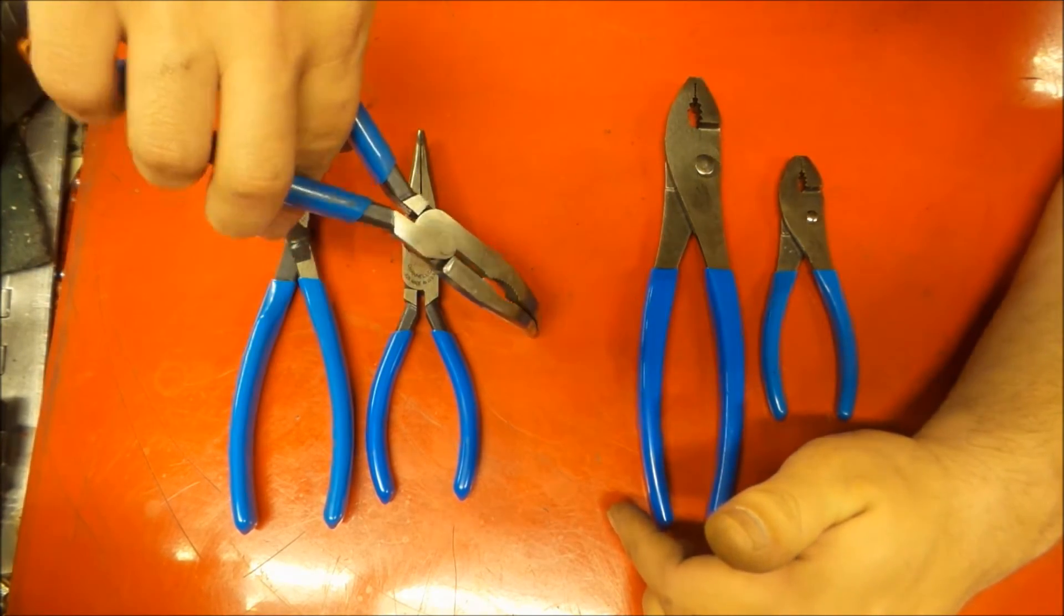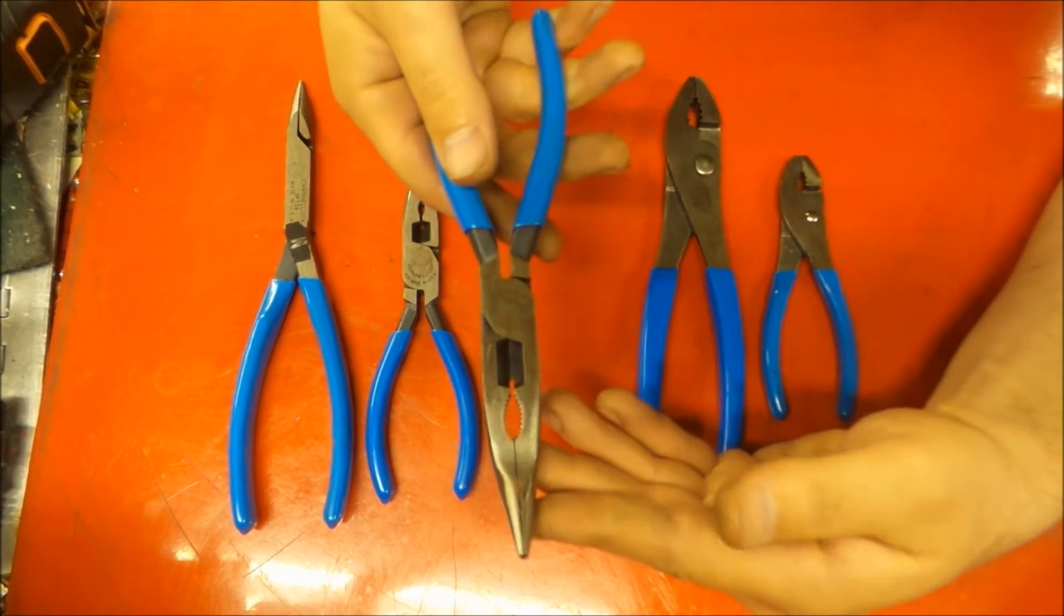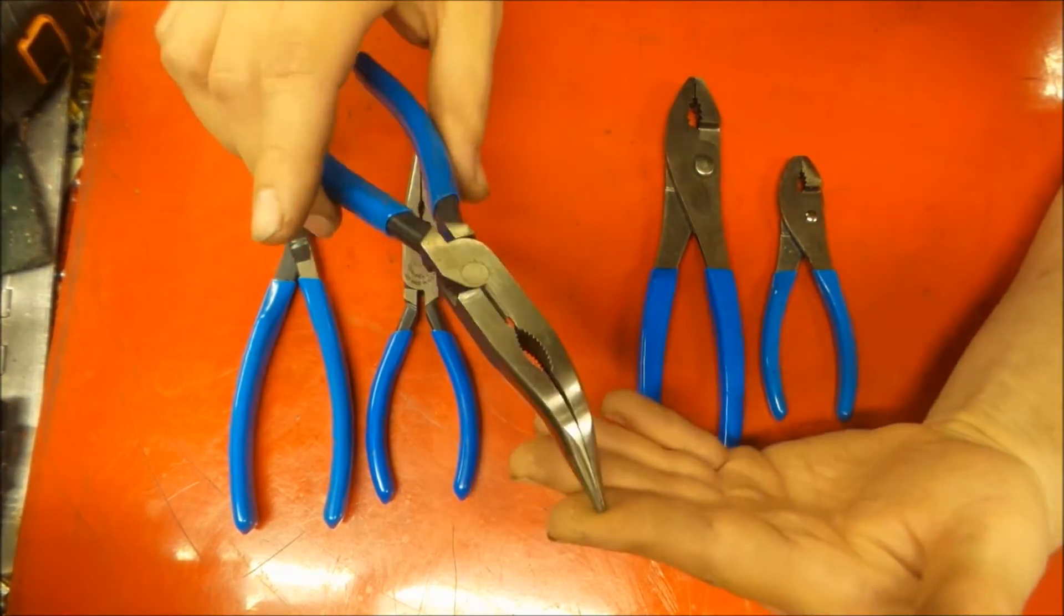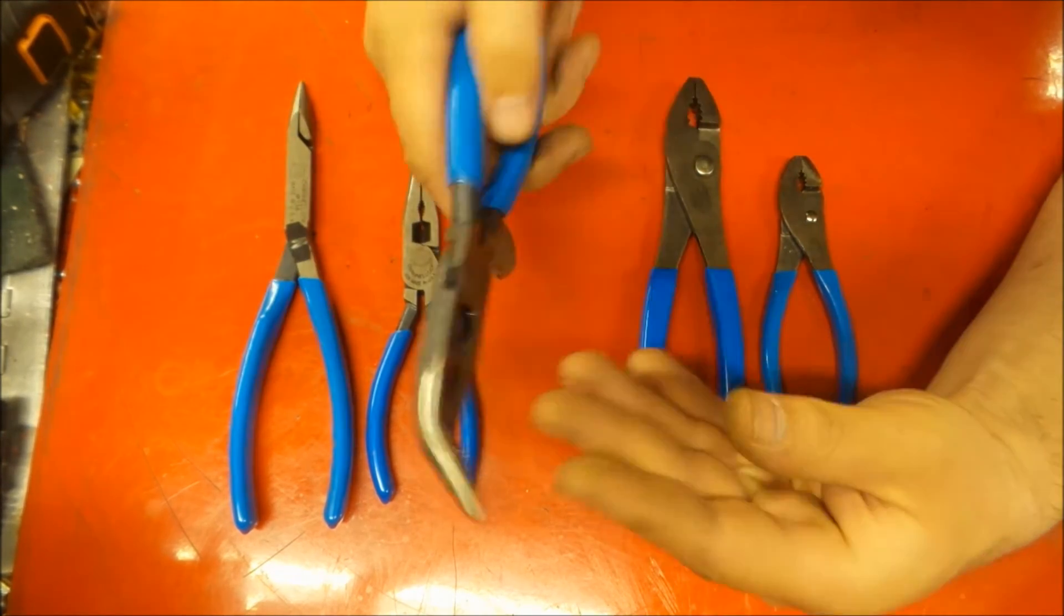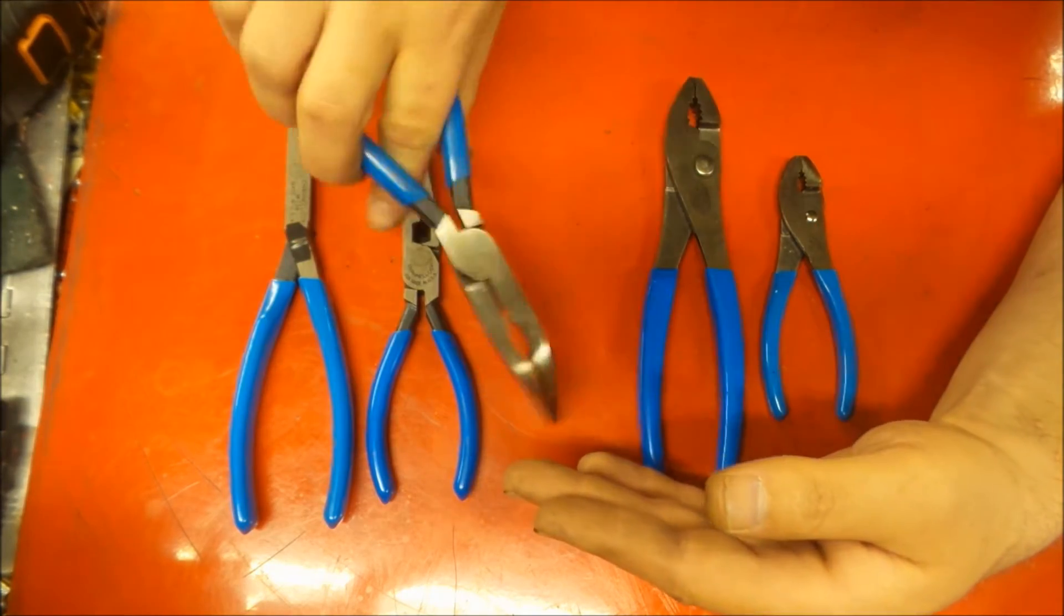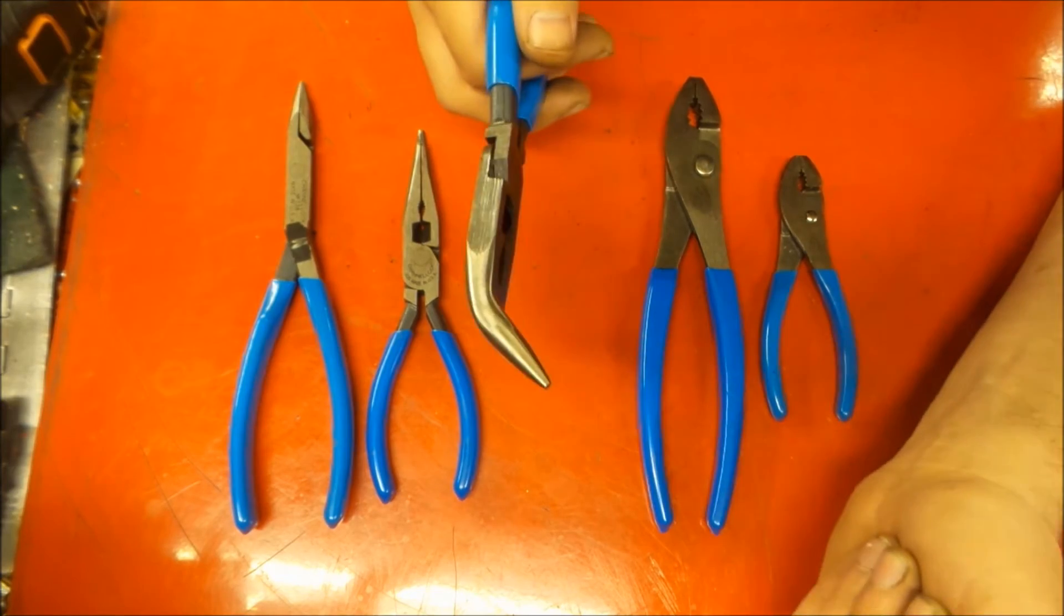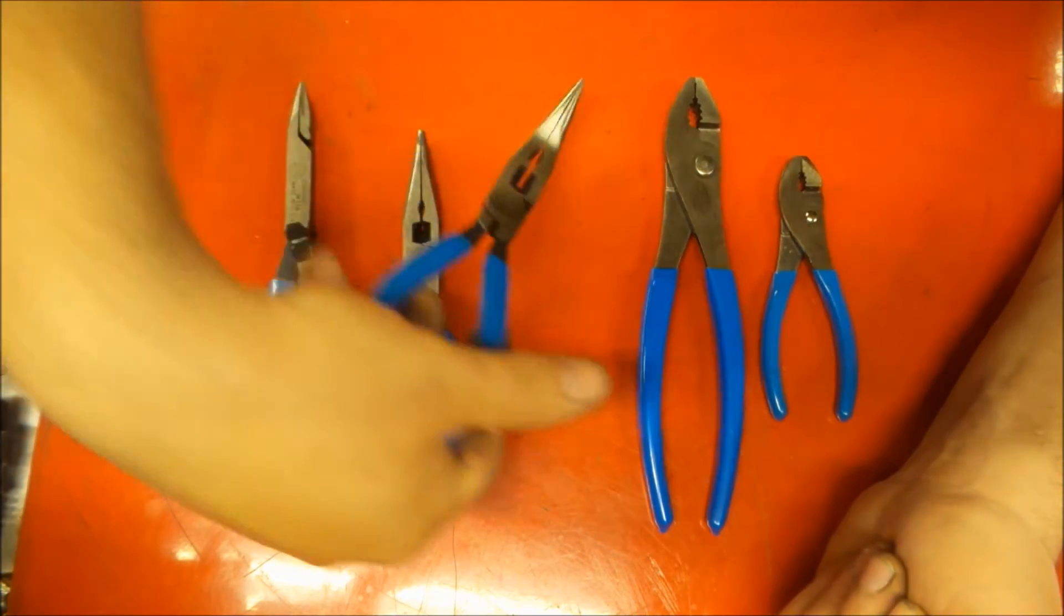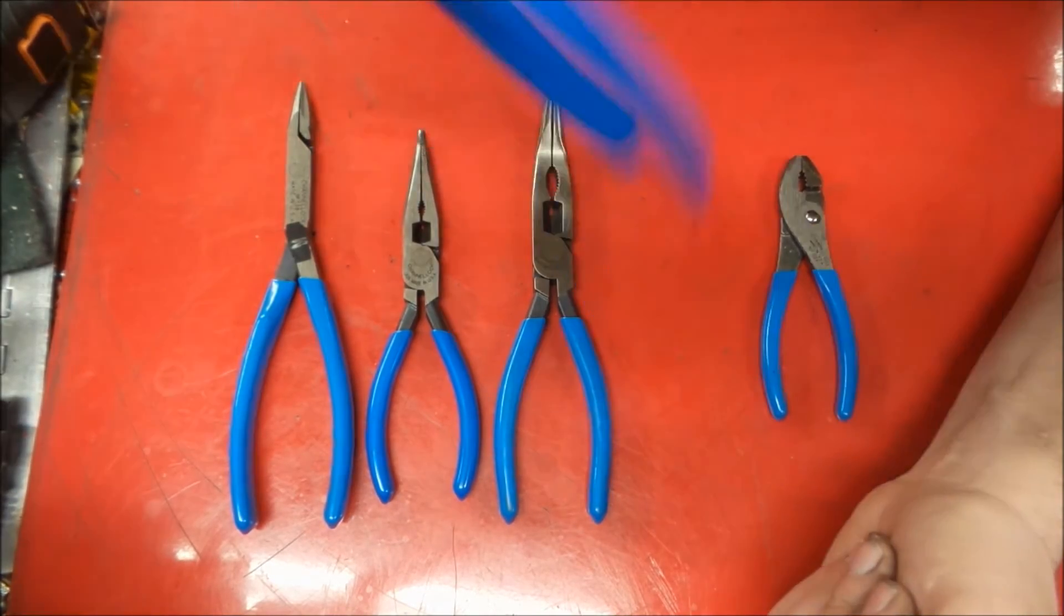So these curve jaw pliers, I like these. And these being a larger set are very handy because when you're grabbing stuff and trying to pull, there's a little bit more meat here and you don't have to worry about bending it. So that was a very welcome addition in the shop.